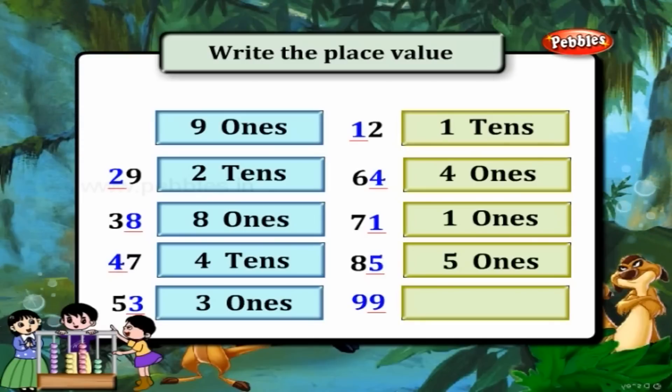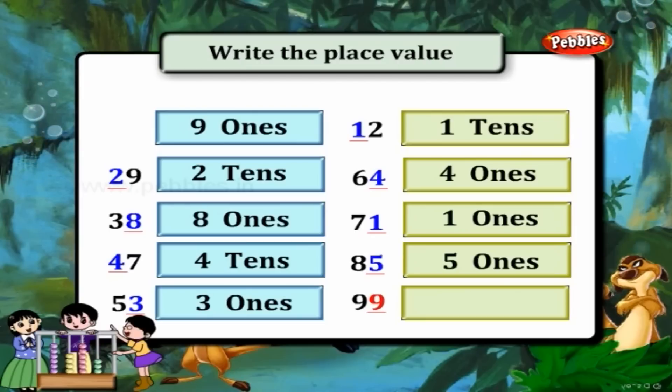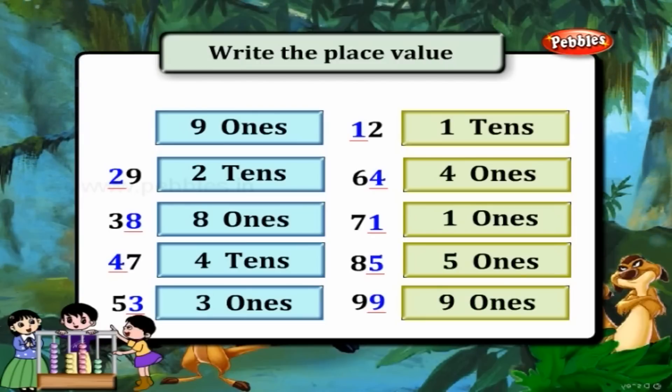99: this 9 is in the ones place — so 9 ones.